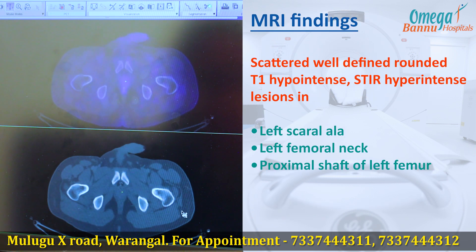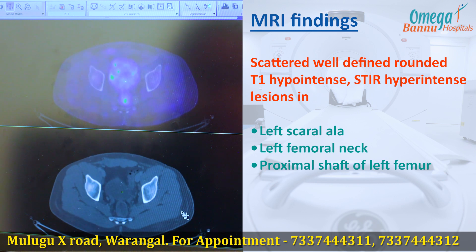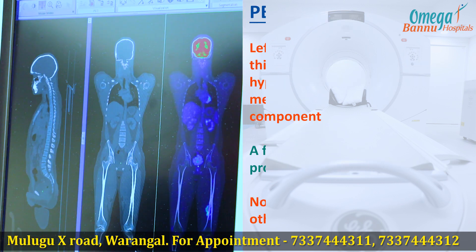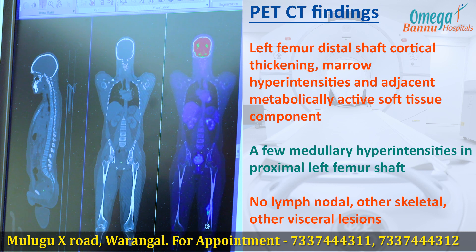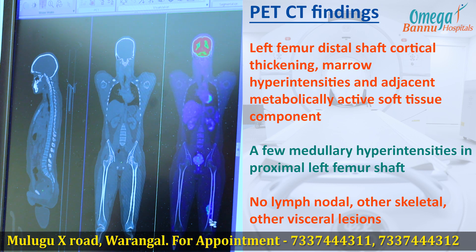The lesions which were detected on the MRI were not appreciated in the current scan. This coronal image highlights the lesion in the craniocaudal aspect in the distal femur, with cortical thickening involving the marrow and adjacent soft tissue showing increased metabolic activity.